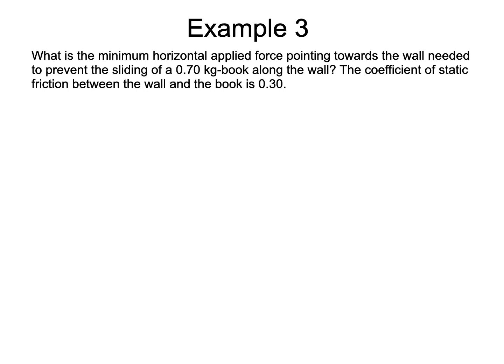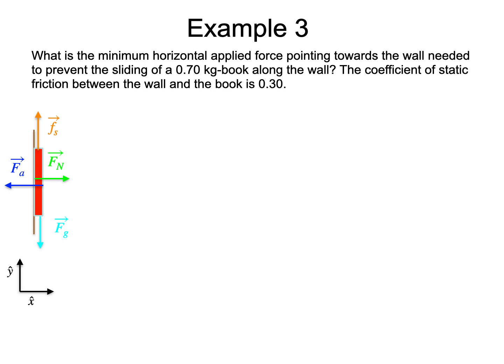This example involves a situation we had already encountered while defining free body diagrams: a book being held at rest against the wall by a horizontal applied force. This time, we want to find the smallest horizontal force that would stop the book from sliding down the wall. Here is the wall, the book, and the applied force. The force of gravity is present, and the contact force consists of the normal force and a static friction force. The static friction force is necessary here because otherwise the gravitational force would pull the book downward and there would be sliding. We will use this system of reference directions. The givens are the mass of the book, the coefficient of static friction, and since the book is to be kept at rest, the acceleration is zero.